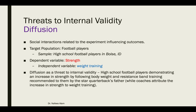The next example is diffusion as a threat to internal validity, defined as social interactions related to the experiment influencing outcomes. The target population is football players, the sample is high school football players in Boise, Idaho, the dependent variable is strength, and the independent variable is weight training. Diffusion would be where high school football players demonstrate an increase in strength by following body weight and resistance band training recommended by the star quarterback's father, but coaches are not aware of that and attribute the increase in strength entirely to weight training, when in fact it could have been partially weight training and partially body weight and resistance band training.